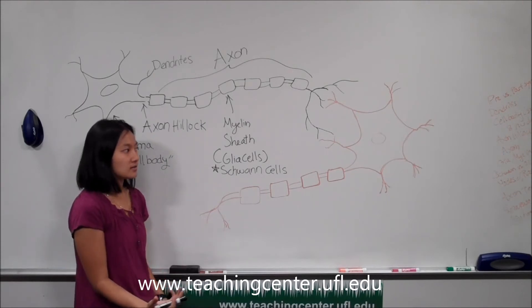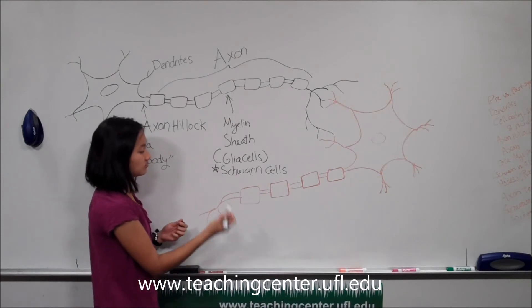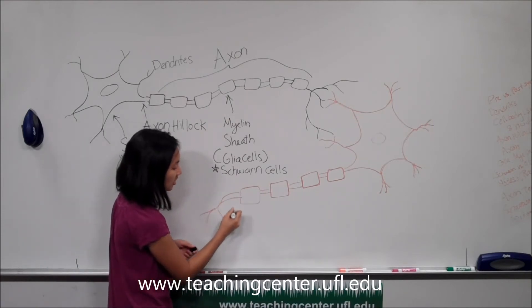The other type of glial cells that can make up the myelin sheath are known as oligodendrocytes.